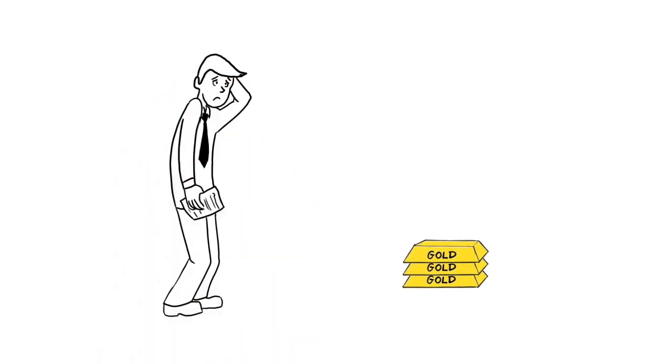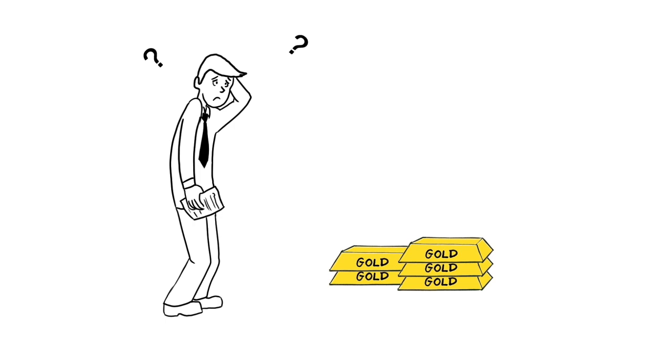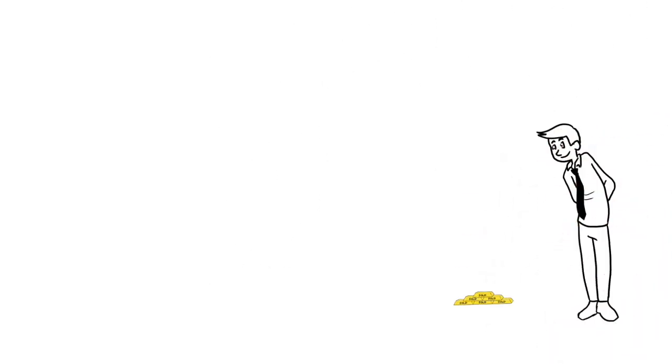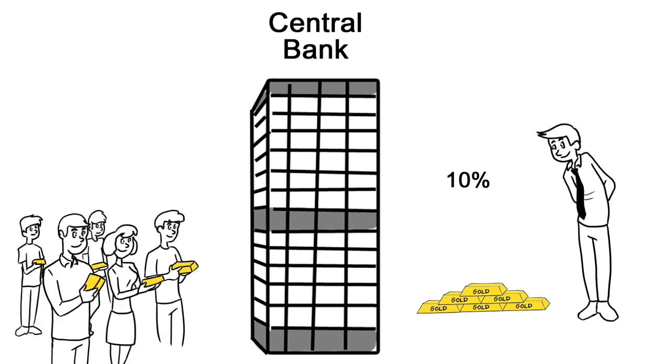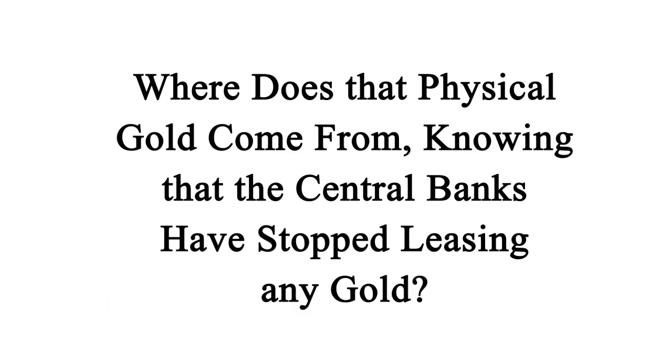No one. Central banks have done it for years, but that trend is over due to their low reserves. Central banks own 10% of existing gold, and the rest is in private hands. Which begs the question, since physical gold leasing hasn't stopped, where does that physical gold come from, knowing that the central banks have stopped leasing any gold?